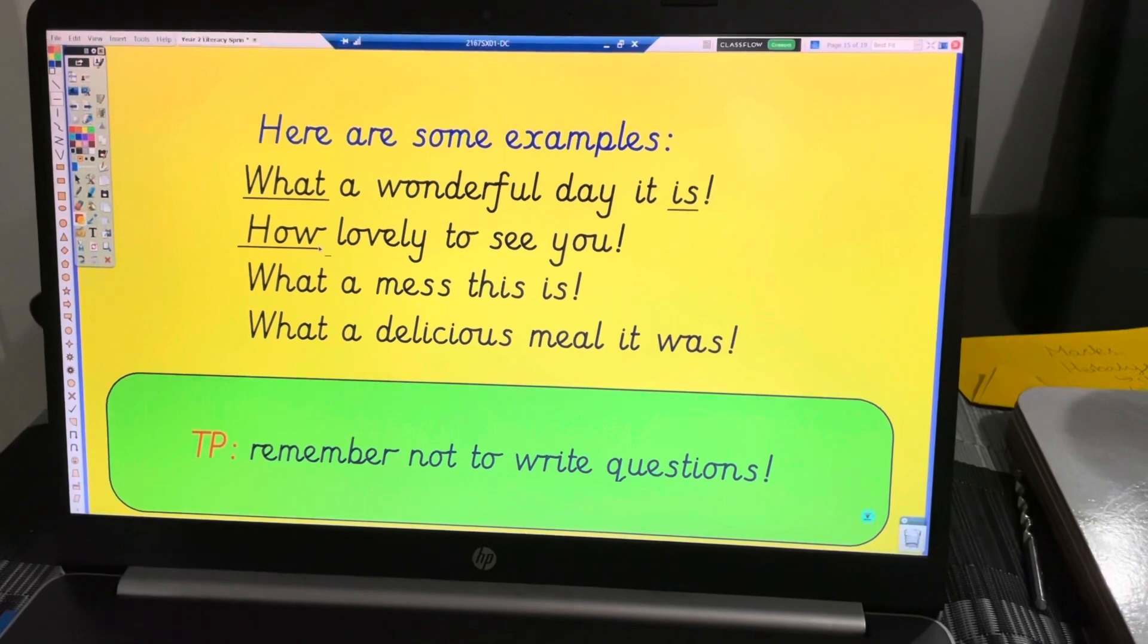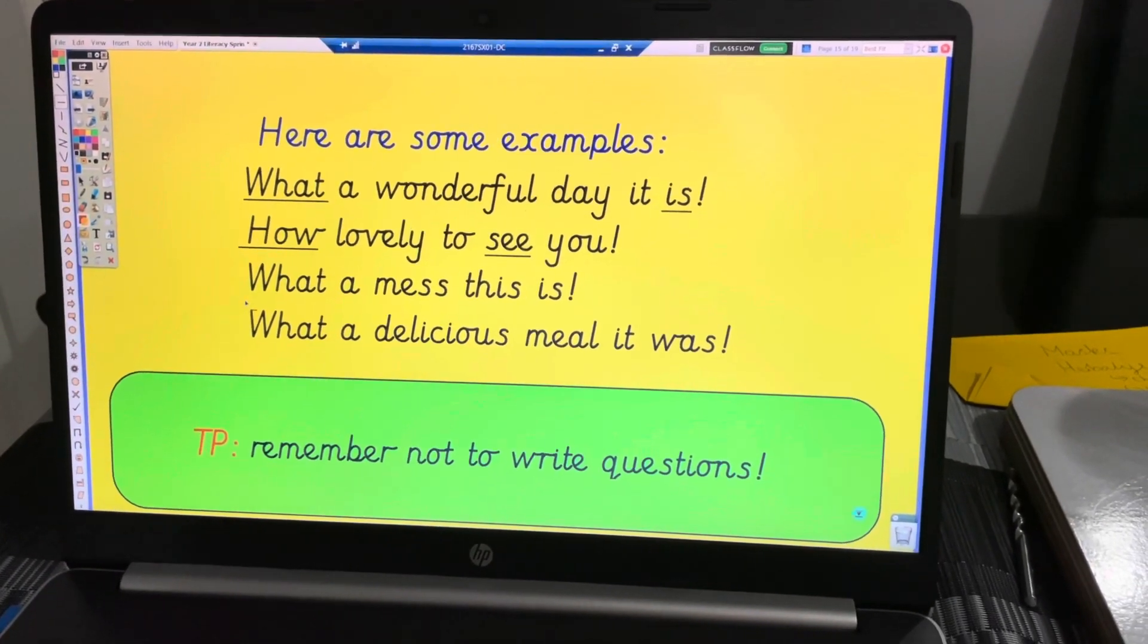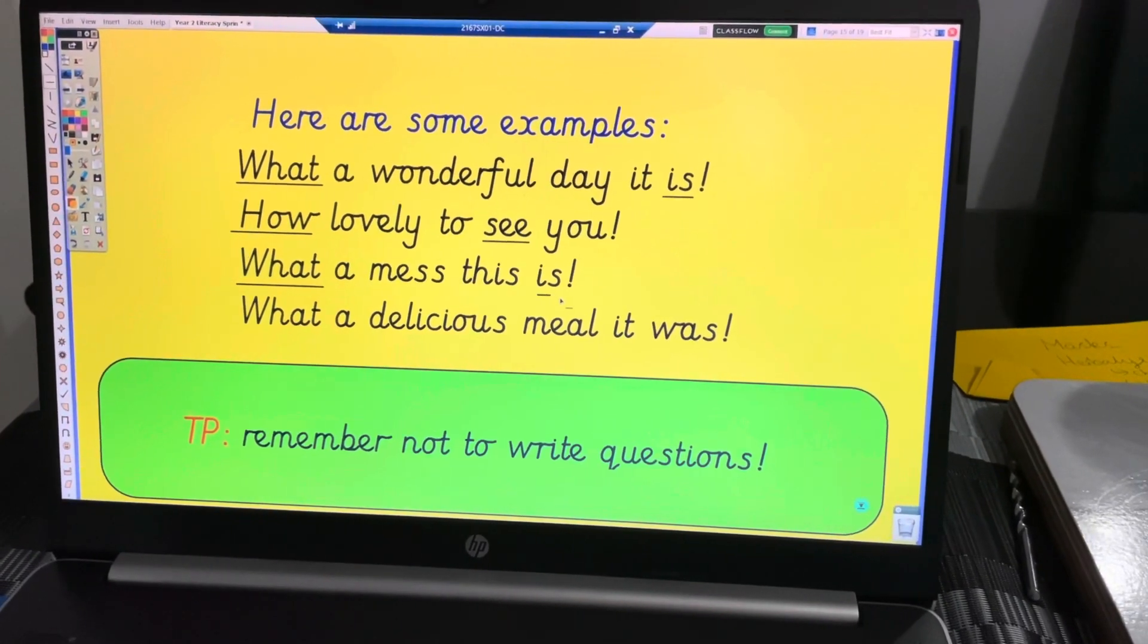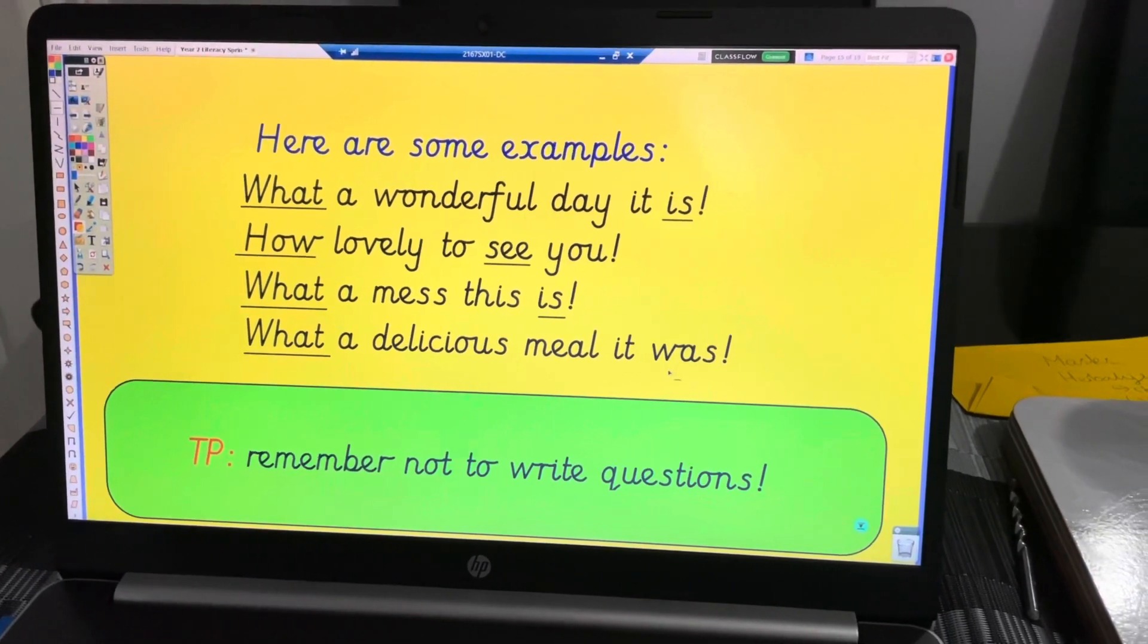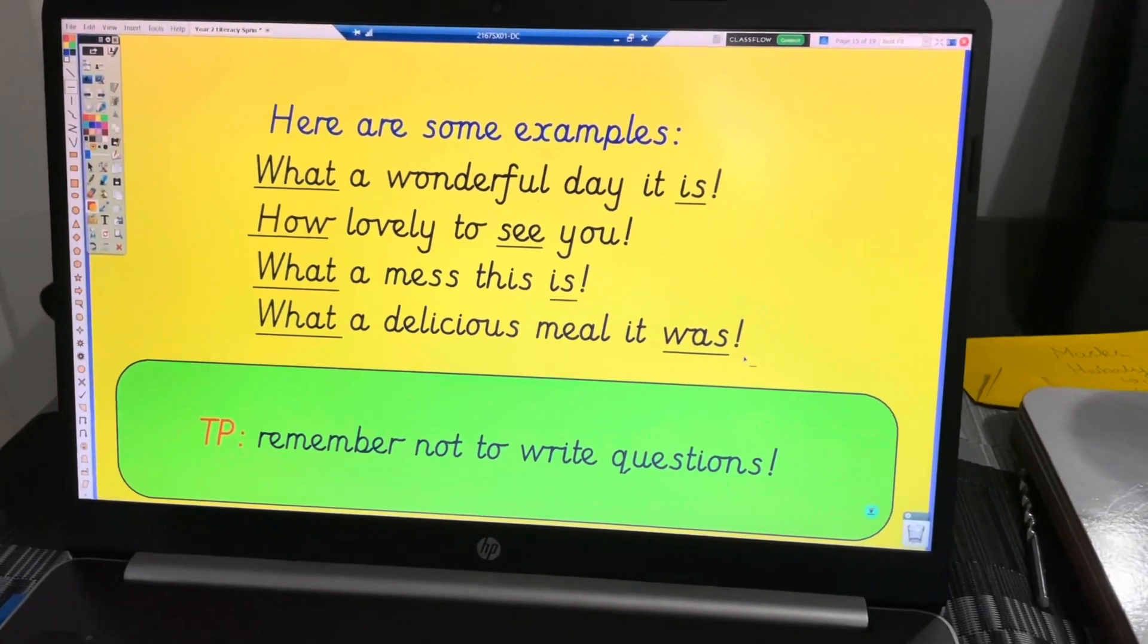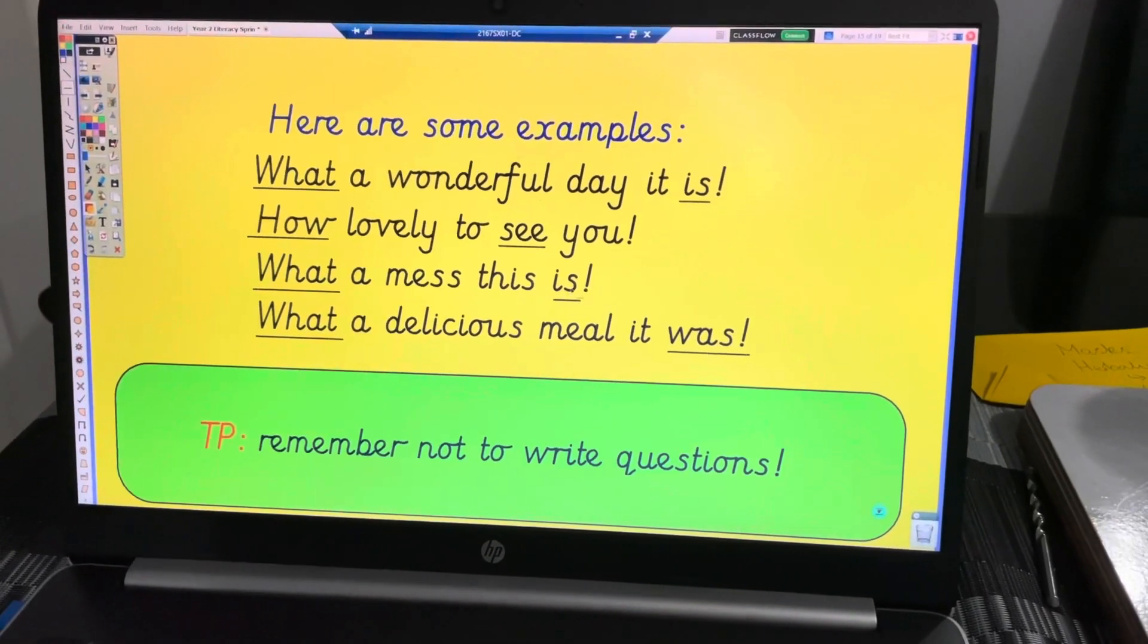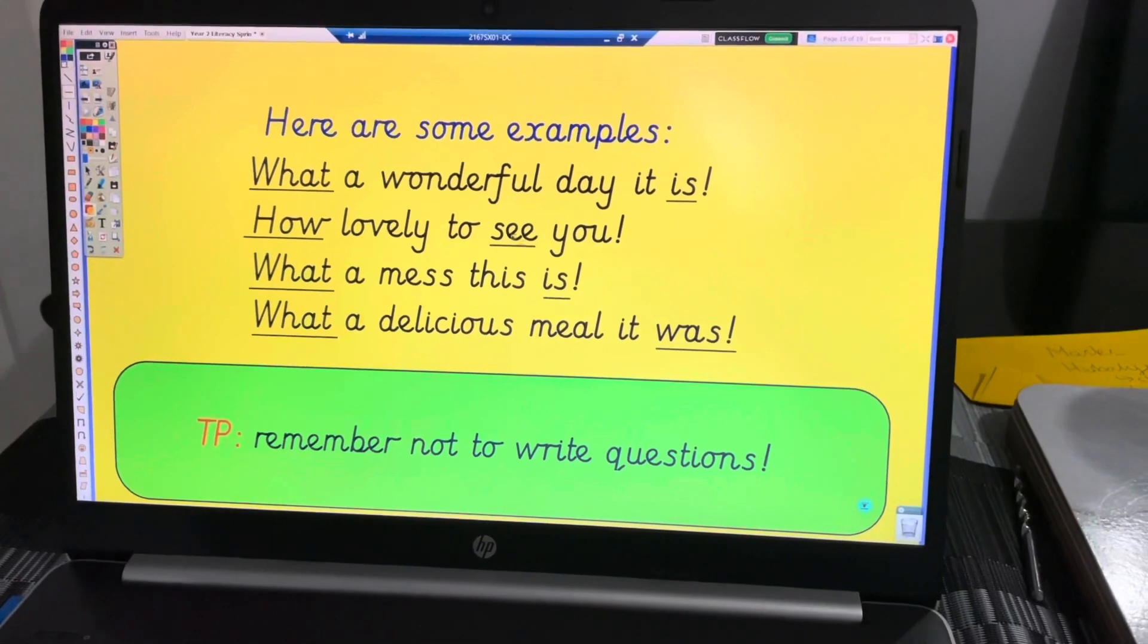'How lovely to see you!' - 'see' is the verb. 'What a mess this is!' - 'is' is the irregular verb. 'What a delicious meal that was!' - 'was' is the irregular verb. It's easier to keep the verb at the end of the exclamatory sentence, or sometimes the verb can be in the middle.